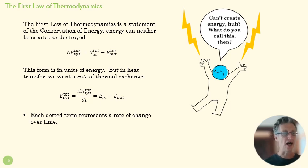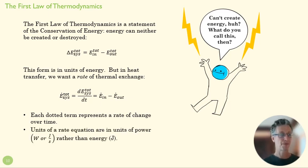So each dotted term represents a rate of change over time. So that's telling us how much energy per unit time is coming into the system, how much energy per unit time is going out. And then this term is the change in the energy of the system per unit time. And the units here are no longer in energy. They're not in joules, but they're in watts, joules per second.